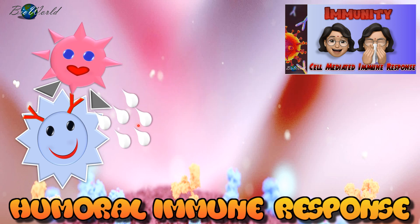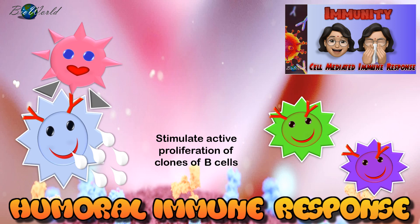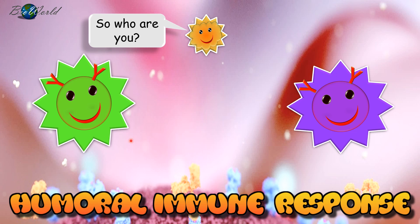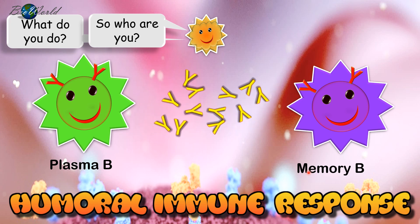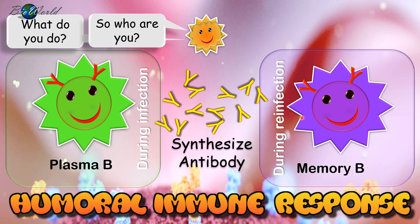In the humoral immune response, interleukin-2 stimulates the B cells to proliferate clones of B cells. The clones of the B cells differentiate into two types: one is the plasma B cell and the other the memory B cell. Both these cells are able to synthesize a protein called antibodies. The plasma B cell will synthesize the antibody when the individual is infected by the pathogen for the first time, whereas the memory B cells will immediately synthesize antibodies when reinfection by the same pathogen occurs.